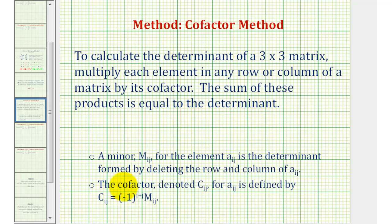The cofactor of each element is equal to negative one raised to the power of i plus j, where i is the row and j is the column of the given element, and m, the minor, is equal to the two by two determinant formed by eliminating the row and column of the given element.